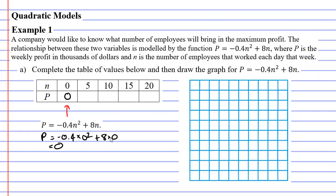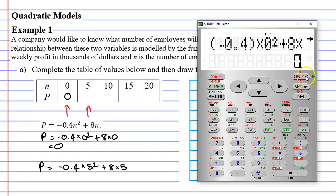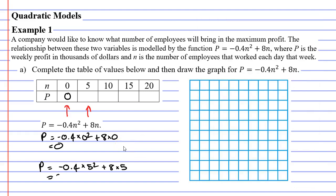When we move on to the next column, n is 5, we're going to substitute that into our equation. So P equals negative 0.4 times n squared or 5 squared this time plus 8n or 8 times 5. Bringing up our calculator, negative 0.4 times 5 squared plus 8 times 5 gives us 30 this time.